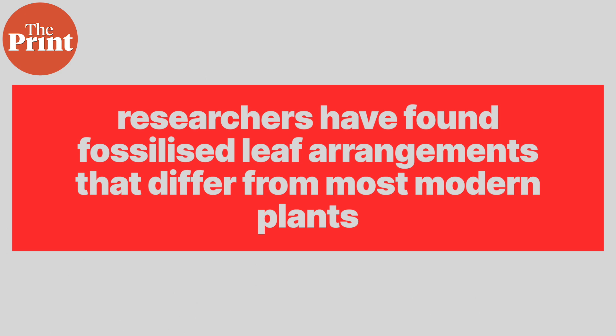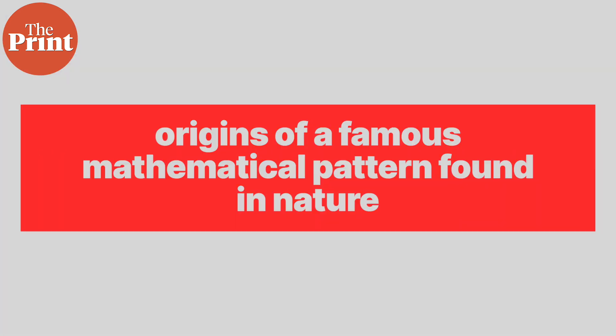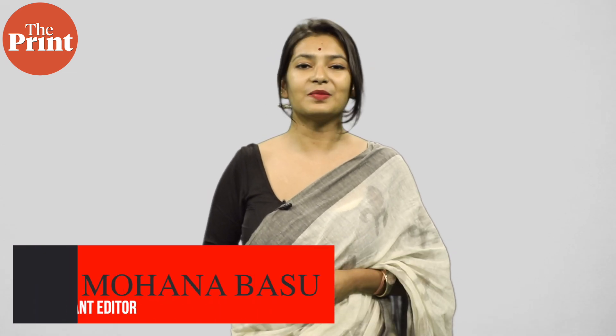But now, researchers have found fossilized leaf arrangements that differ from the most modern plants, overturning the long-held theory regarding the origins of a famous mathematical pattern found in nature. In this episode, I'll tell you all about the Fibonacci sequence and spirals, its relevance in nature, and why the latest research changes notions about this mathematical pattern. I am Mohana Basu, and this is Pure Science.